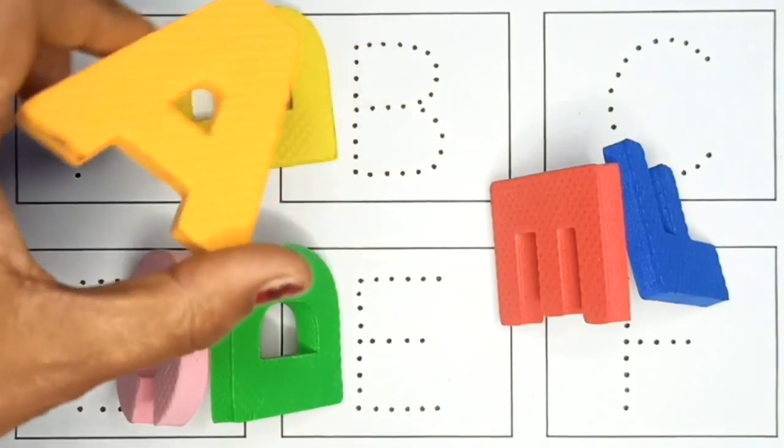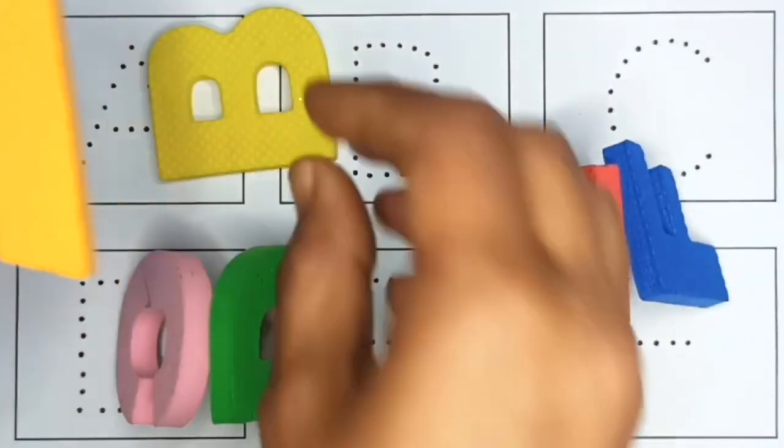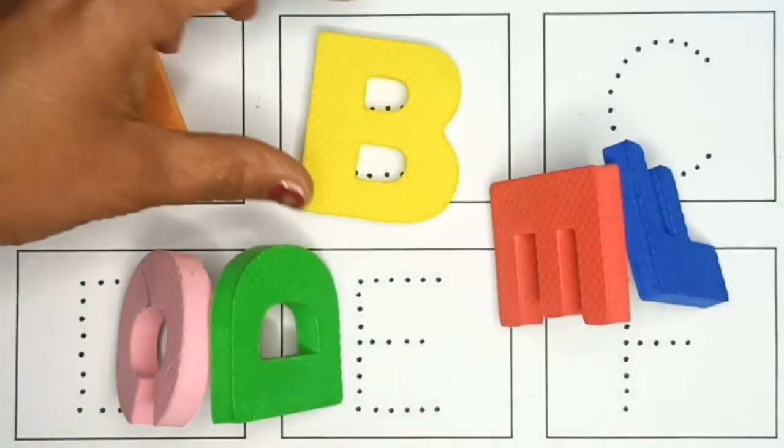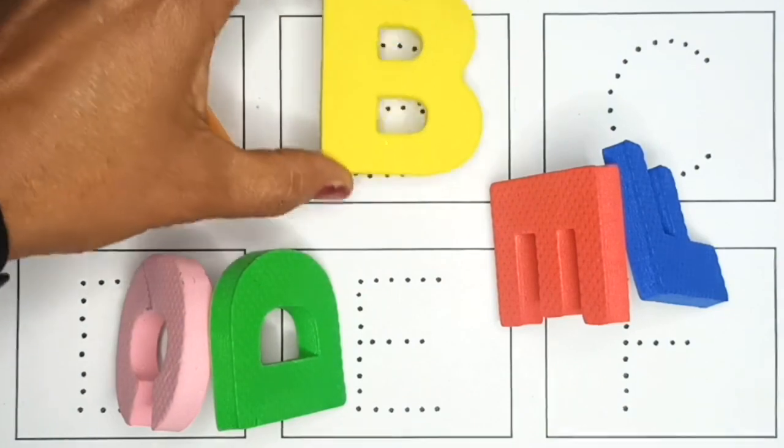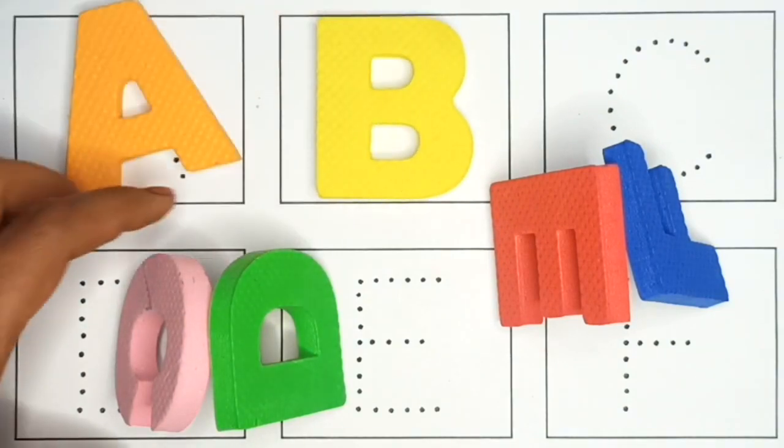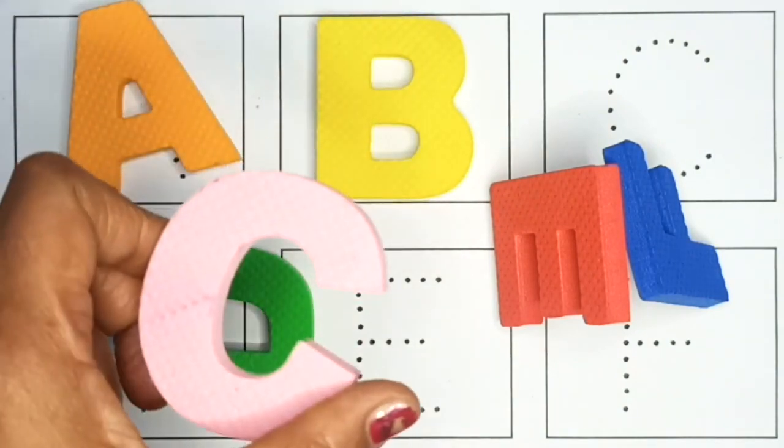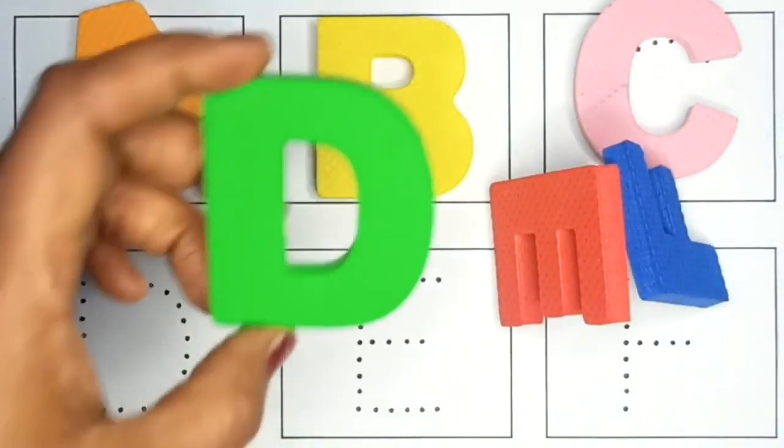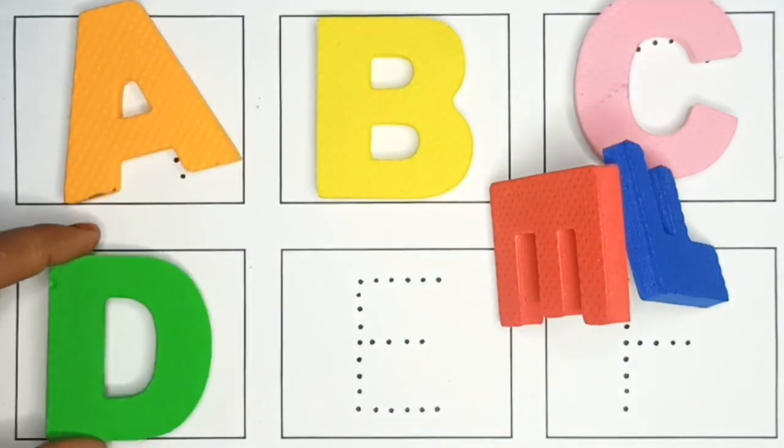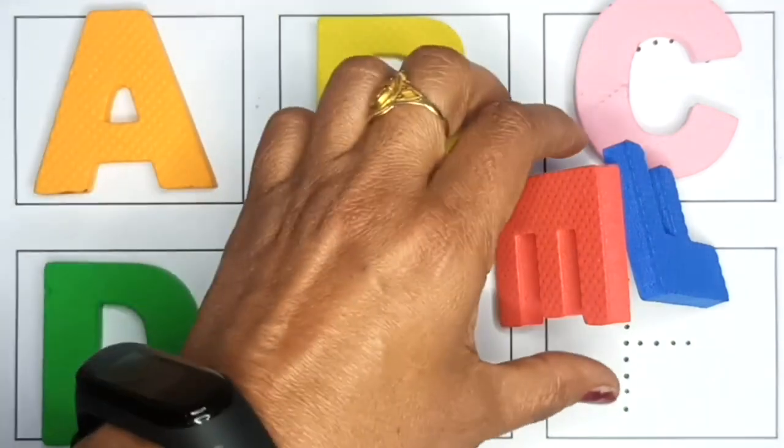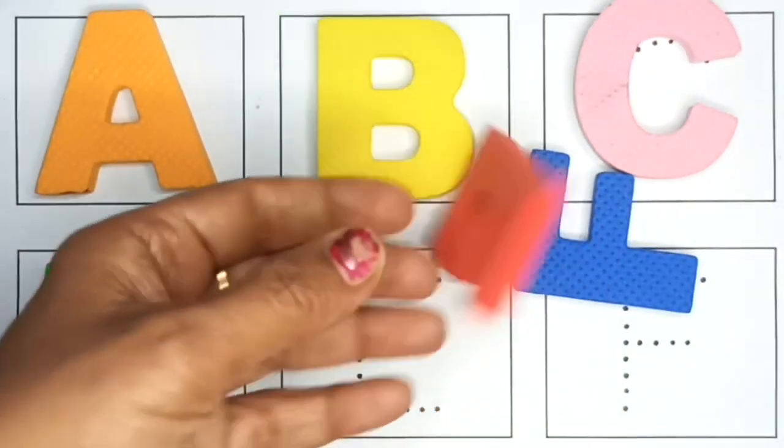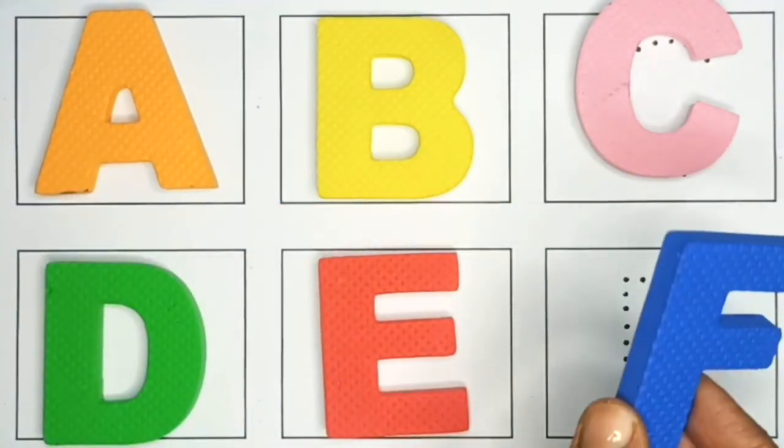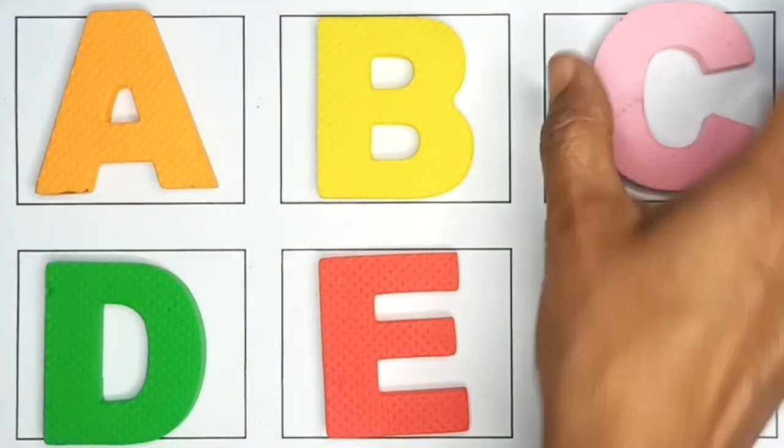A. A for apple. A. B. B for ball. C. C for cat. D. D for dog. E. E for elephant. F. F for fish.